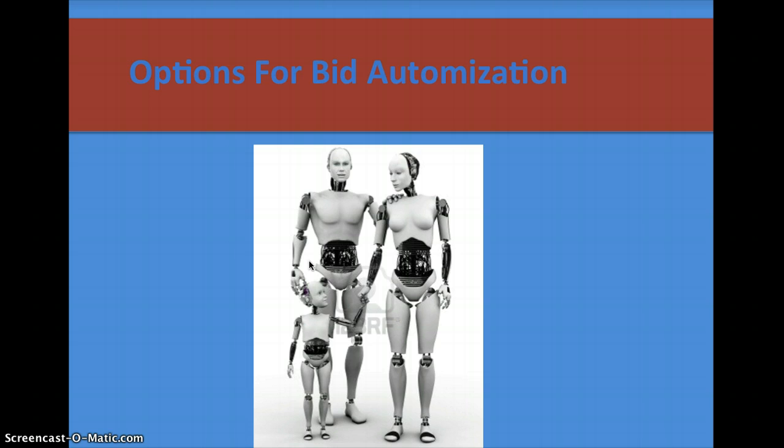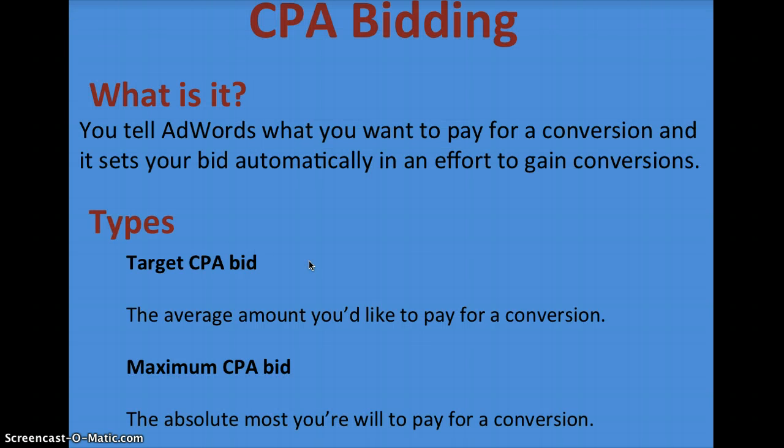We're going to talk about options for bid automation. One of the options is CPA bidding, which is basically when you tell AdWords you want to pay for a conversion, and then it tries to set your bids automatically in an effort to gain those conversions.